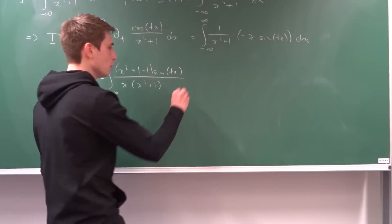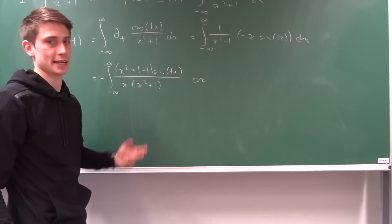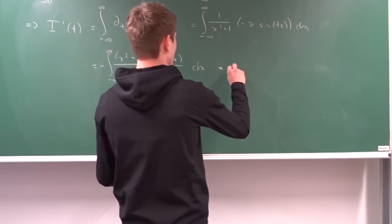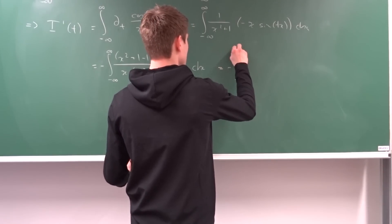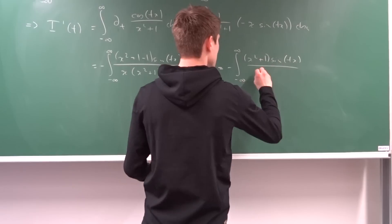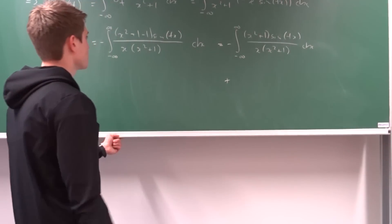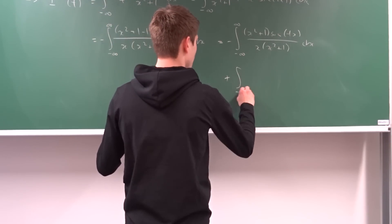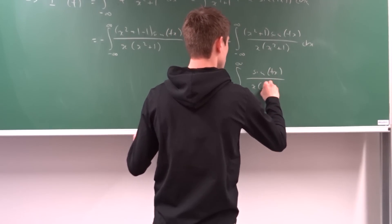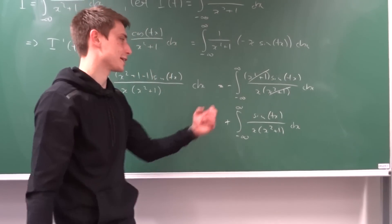We distribute sine(t·x) into the minus 1 term and into the (x² + 1) factor, then use the linearity of the integral to split it up. In conclusion, we now have the negative integral from minus infinity to infinity of (x² + 1)·sine(t·x) over (x·(x² + 1)) dx, plus the integral of sine(t·x) over (x·(x² + 1)) dx.